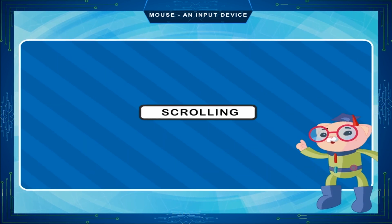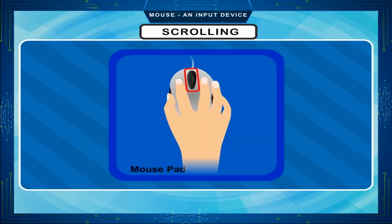Scrolling. The scrolling wheel between the left and right click buttons is used to move a page up and down.